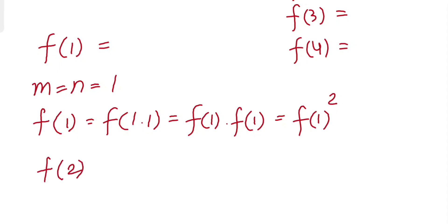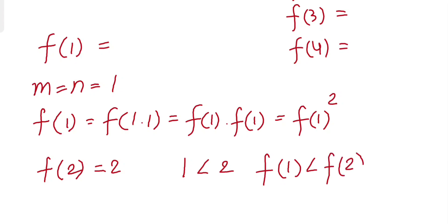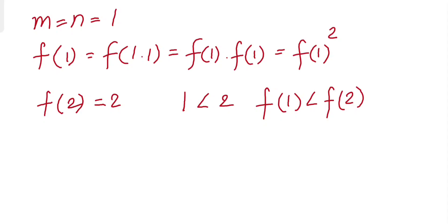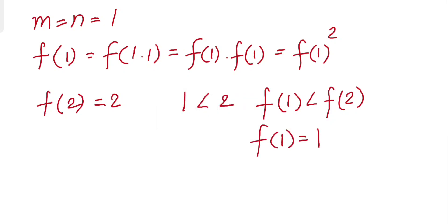We know f(2)=2, and since f is strictly increasing, 1 < 2 means f(1) must be less than f(2)=2. Because we are working over natural numbers and zero is not included, the only number less than 2 in the natural numbers is 1. Therefore f(1) must equal 1.